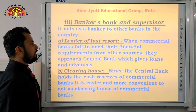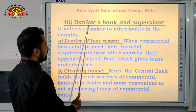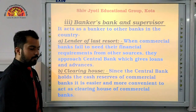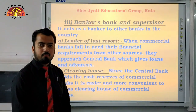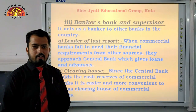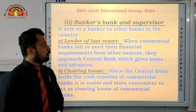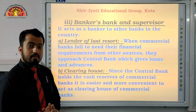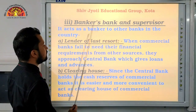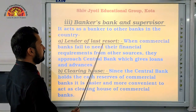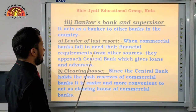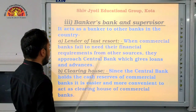The third function is Bankers' Bank and Supervisor. In simple terms, all commercial banks in the country also have a bank — the central bank — where they deposit their savings and keep certain reserves. The central bank acts as banker to all other banks in the country. One key role here is Lender of Last Resort: when commercial banks fail to meet their financial requirements from other sources, they approach the central bank for loans and advances.